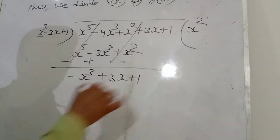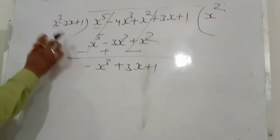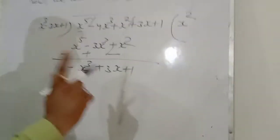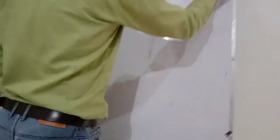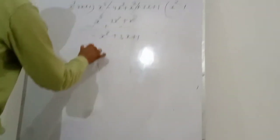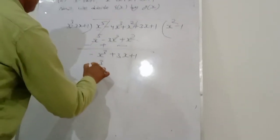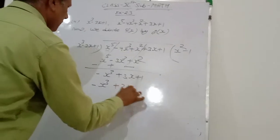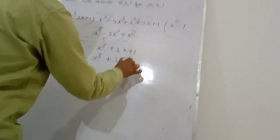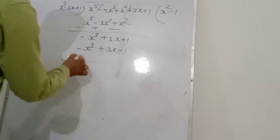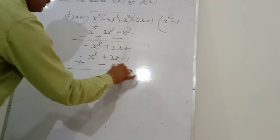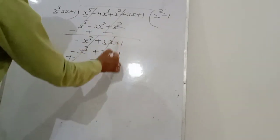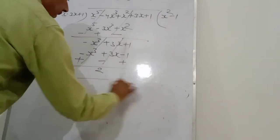अब यहाँ पर देखिए, 3x + 1 बचा है. फिर से x³ से x³ को divide करना है — how many times? Only minus 1. So minus 1 times: -x³ minus(-3x) gives +3x, and -1. Sign change किया — plus, minus, plus. x³ cancel, 3x cancel, लेकिन यहाँ पर दोनों plus 1 और plus 1 हैं, तो remainder 2 आ गया student.